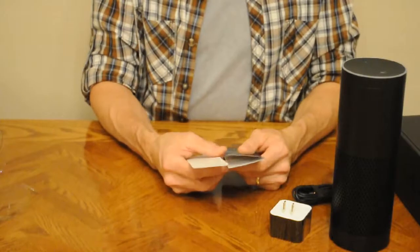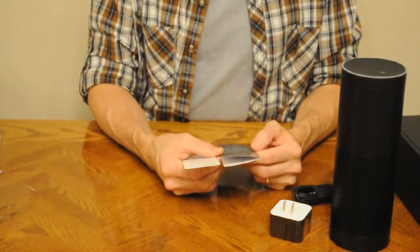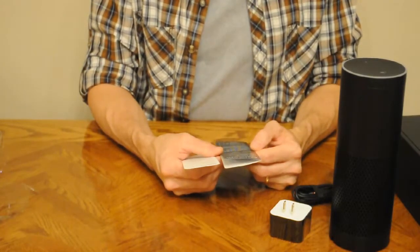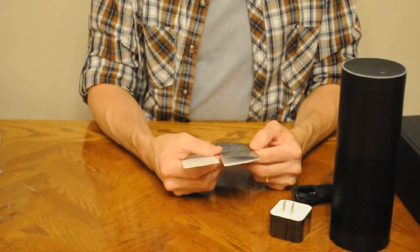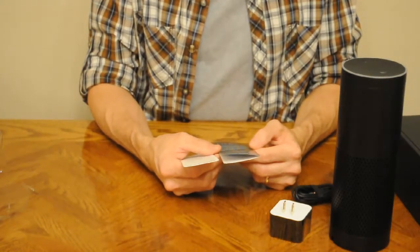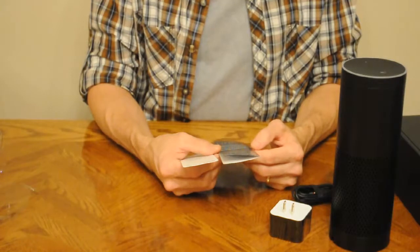Plug in your Echo. Number one: plug the included power adapter into Echo and then into a power outlet. A blue light ring will begin to spin around the top. In about a minute the light ring will change to orange and Alexa will greet you.